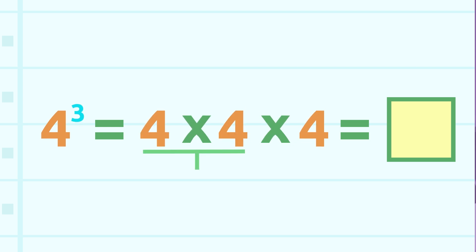To calculate four to the power of three, we should multiply four by itself three times. Four times four is sixteen, and sixteen times four is sixty-four. Four to the power of three is sixty-four. Well done everyone.